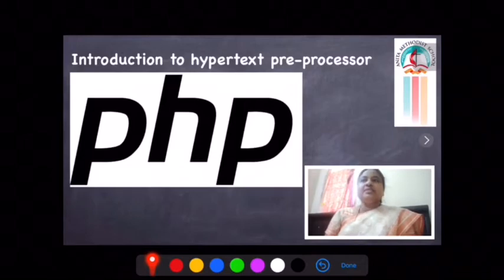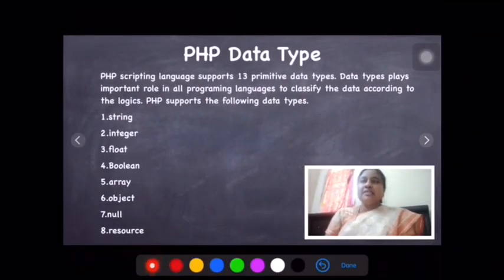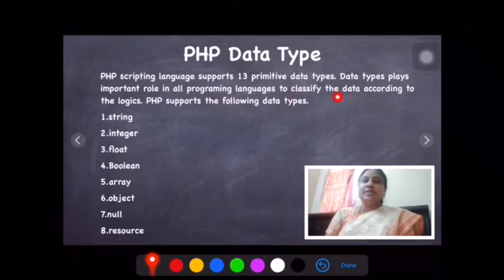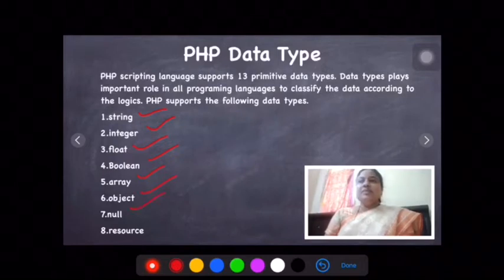Now we are going to discuss about PHP data types. PHP scripting language supports 13 primitive data types. Data types play an important role in all programming languages to classify the data according to the logic. Here there are 8 important data types we are going to learn in PHP: string, integer, float, boolean, array, object, null, and resources.